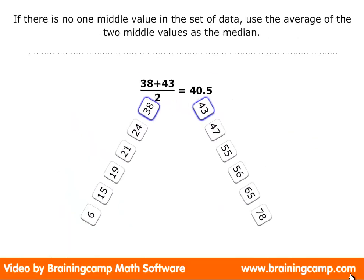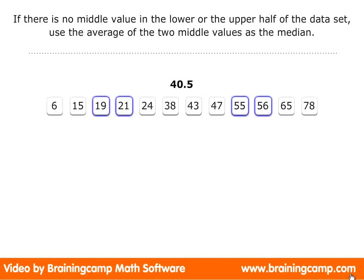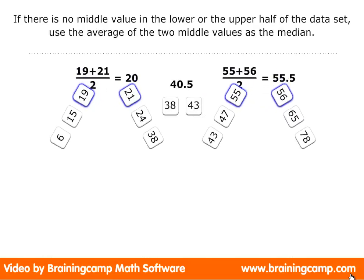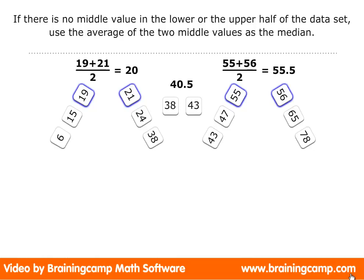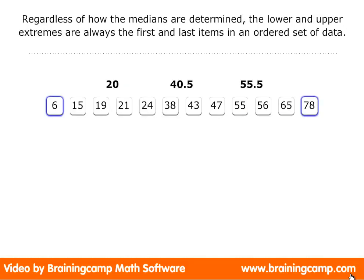If there is no one middle value in the set of data, use the average of the two middle values as the median. If there is no middle value in the lower or the upper half of the data set, use the average of the two middle values as the median. Regardless of how the medians are determined, the lower and upper extremes are always the first and last items in an ordered set of data.